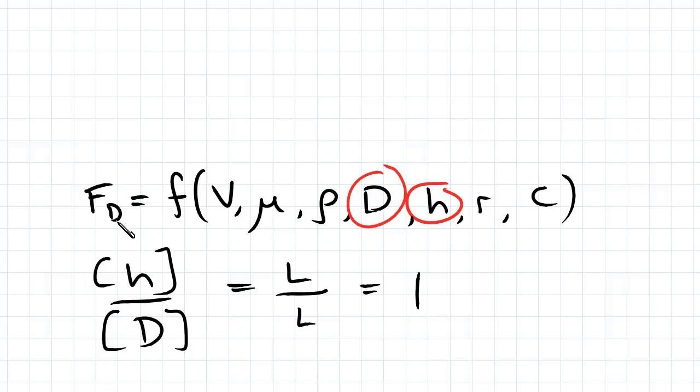So we can continue this process to find k-r pi groups. So in this case it would be 8 minus 3, which is 5, we can create 5 pi groups through this process.